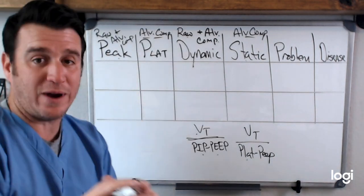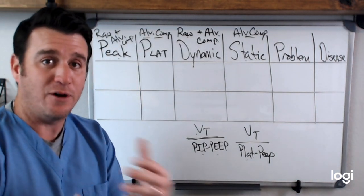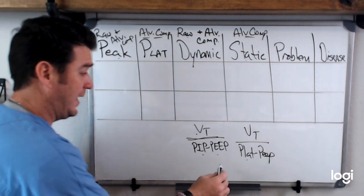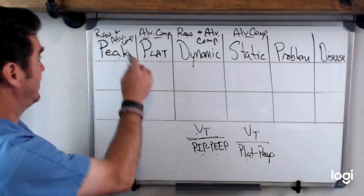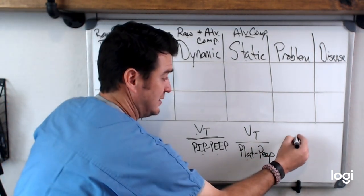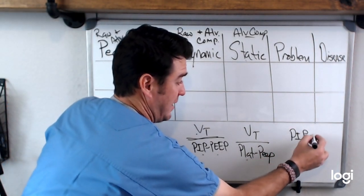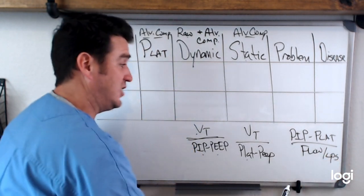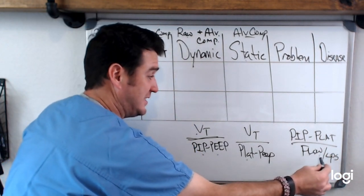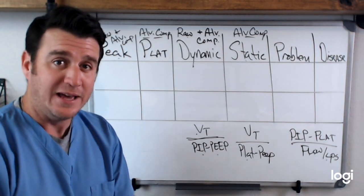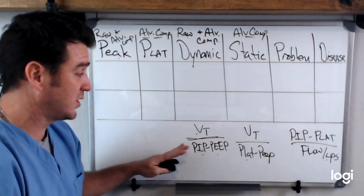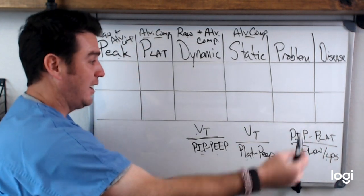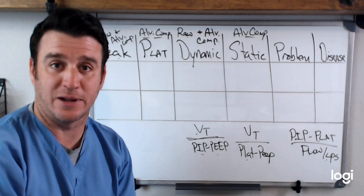I want to put one more formula up here — airway resistance. That formula is PIP minus plateau divided by flow in liters per second, which means you have to divide your flow by 60 to get liters per second. The reason these formulas are all up here is because PIP and plateau are constant reminders and constant game players in all of these formulas.